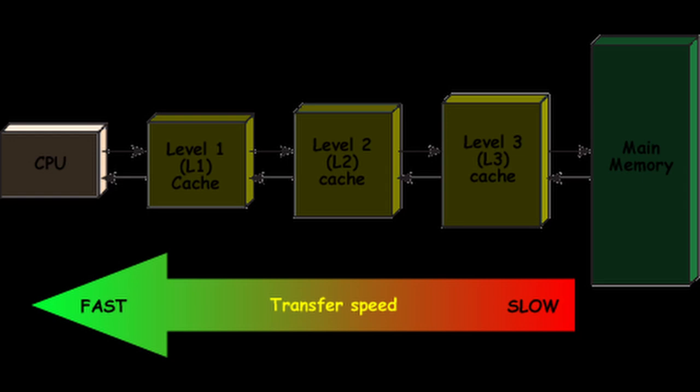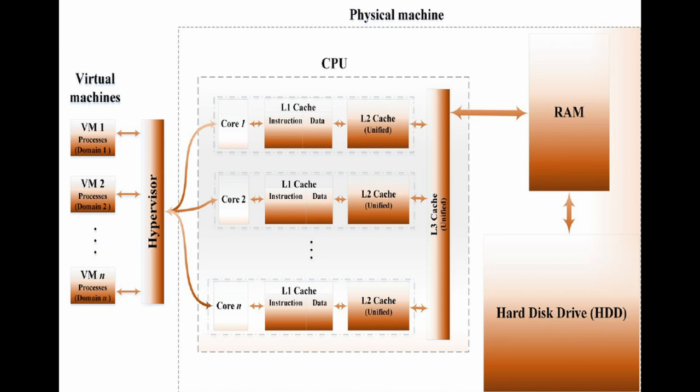The CPU uses a cache hierarchy to prioritize data and instructions, with the most frequently accessed items being stored in the fastest cache level. The use of CPU cache significantly improves the performance of the computer because it reduces the time the CPU spends waiting for data to be fetched from slower memory. By keeping frequently accessed data and instructions close to the CPU, the cache reduces the number of times the CPU has to wait for data to be fetched.